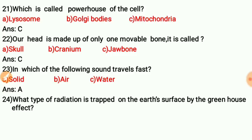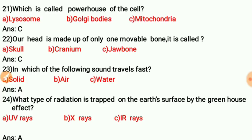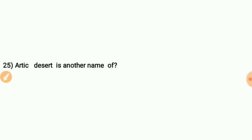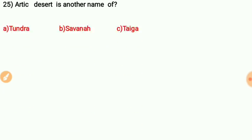Question twenty-three: What type of radiation is trapped on the Earth's surface by the greenhouse effect? The correct answer is UV rays — ultraviolet rays.